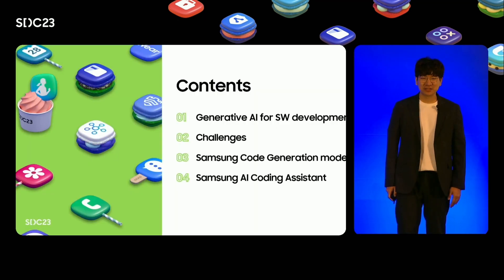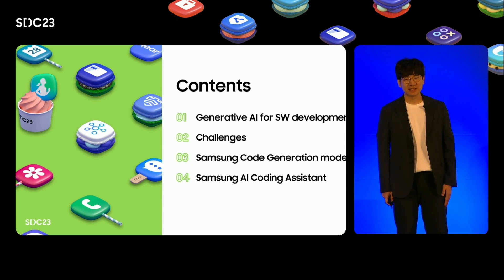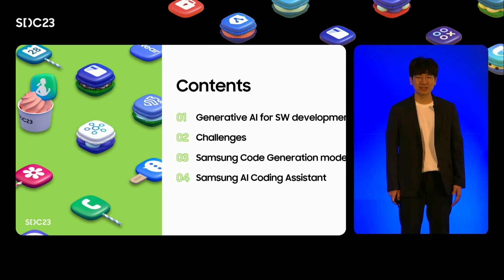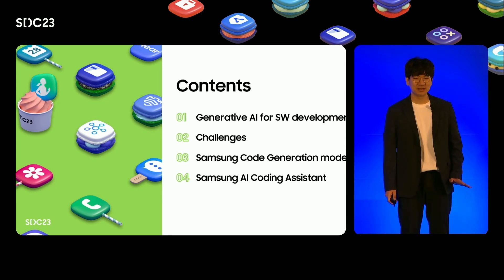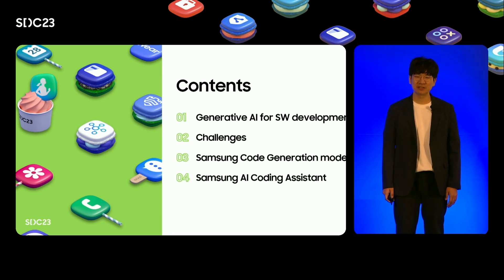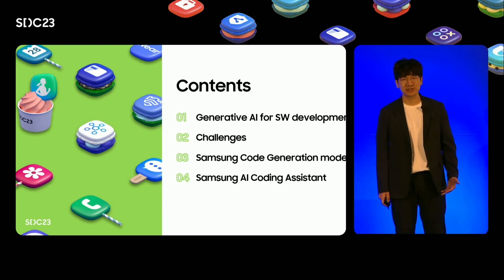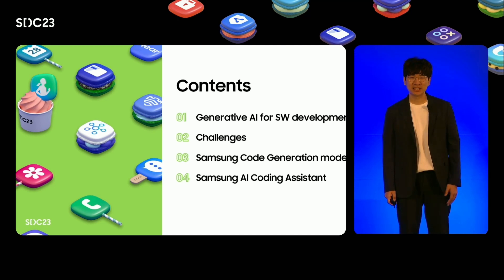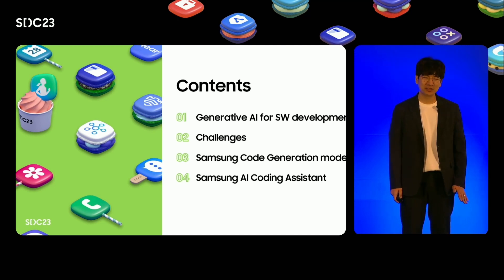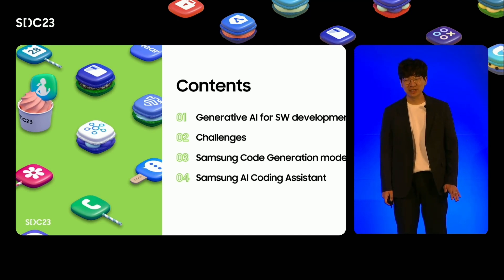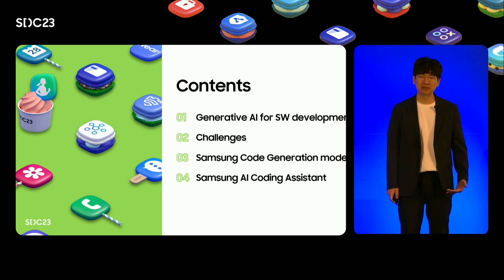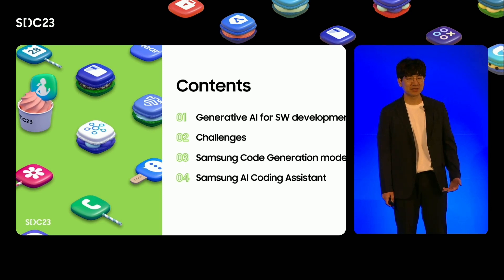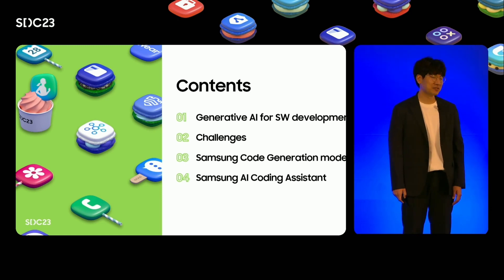In this session, we will cover the following topics. First, we will explore Generative AI and its applications in software development. Then, we will talk about some of the challenges we've encountered when using external AI coding assistant tools within a company. After that, I will introduce our code generation model and internal coding assistant tool that has the potential to revolutionize software development at Samsung. So let's get started.